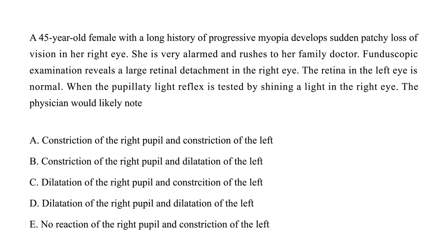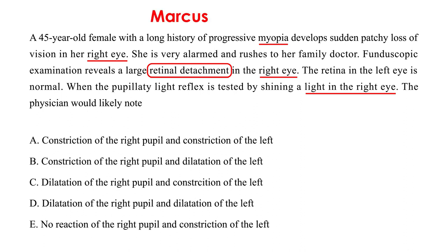A 45-year-old female with a long history of progressive myopia develops sudden patchy loss of vision in her right eye. She rushes to her family doctor. Fundoscopic exam reveals a large retinal detachment in the right eye; the retina in the left eye is normal. When the pupillary light reflex is tested by shining a light in the right eye, the physician would note — and recall that retinal detachment is one of the causes of Marcus Gunn pupil.